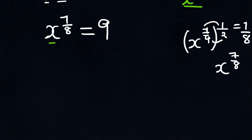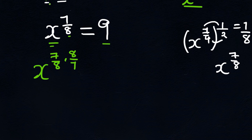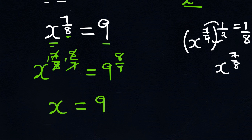We are looking for the value of x, so we need to get rid of the exponent of 7 over 8. To do that, we multiply both sides by the reciprocal of the exponent. So x to the power 7/8 is raised to the power of 8 over 7. The 8's cancel and the 7's cancel, leaving x to the power of 1, which is x. This equals 9 to the power of 8 over 7. Therefore, x equals 9 to the power of 8 over 7. This is our answer.